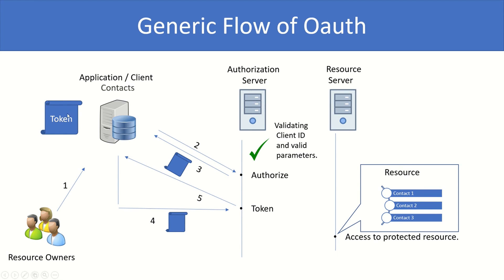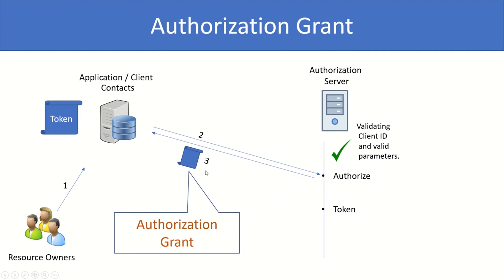The next step is for the application to use that information and send a new request to the token endpoint, after which the authorization server sends a token back to your application. Your application then uses this token to access the protected resource. The most important step — step three — is where the authorization server validates credentials, presents a consent screen, consent gets approved, and the first acknowledgement is sent back. This process is known as authorization grant.